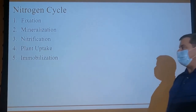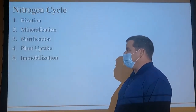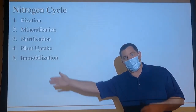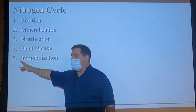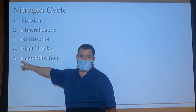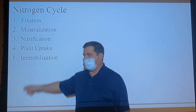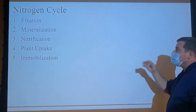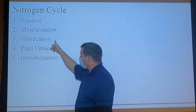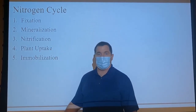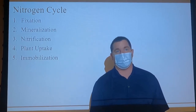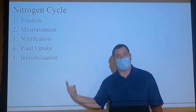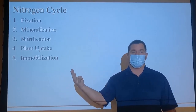Next, we have immobilization. Immobilization is inorganic nitrogen back to organic nitrogen — you can think of 'I' for inorganic to organic. Mineralization, plant uptake, and immobilization are going to be central to pretty much every nutrient cycle. We're mostly concerned with N, P, K, and sulfur.